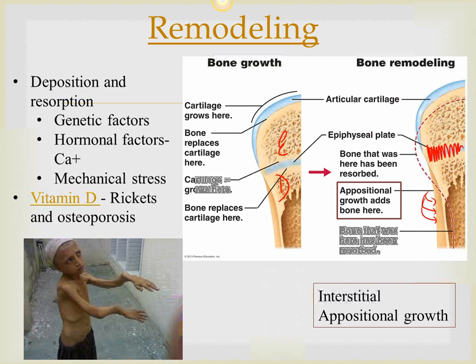Osteoporosis is a condition where deposition and resorption are imbalanced — bone deposition is low but resorption is more, so the bones become brittle. But if you keep exercising and mechanically stressing the bone, bone will keep getting deposited, which helps to at least overcome some of the effects of osteoporosis.